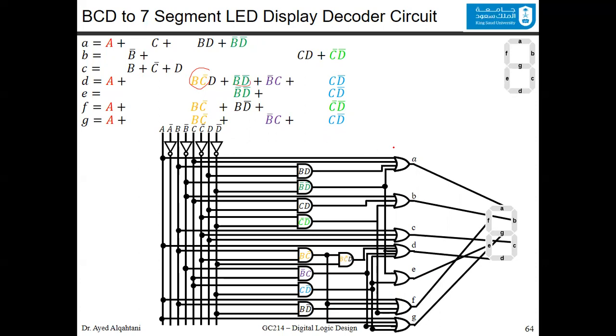You can confirm for each function A, B, C, D, E, F, and G, the correct equation or the correct function is implemented using primitive gates. This A, B, C, D, E, F, and G is connected to the LEDs to perform the BCD to seven-segment LED display decoder circuit.